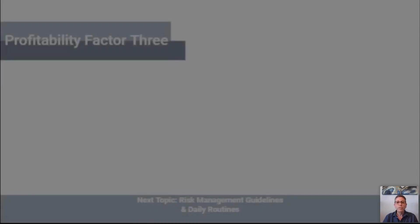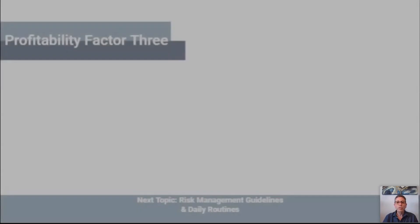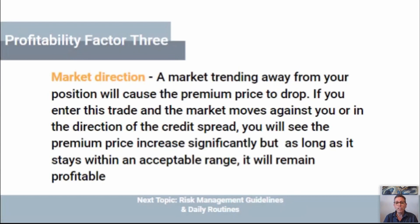Profitability factor number three is market direction. If you can get the market direction right on these trades, you're going to be profitable. A market trending away from your position will cause the premium price to drop. If the market moves in the direction of the credit spread, you will see the premium price increase significantly. But as long as it stays within the range you have, it will remain profitable — you can have a losing trade all through the session but make it profitable as long as it stays in that range.